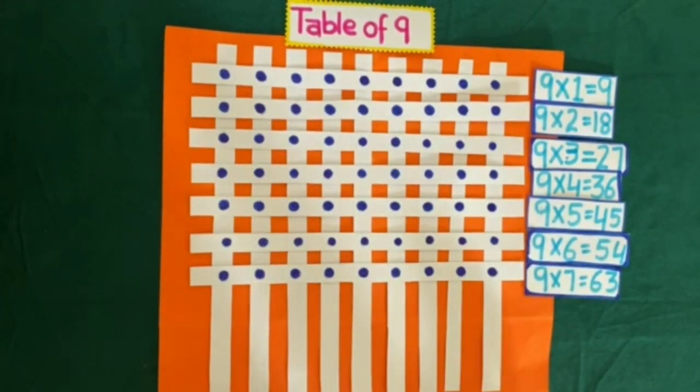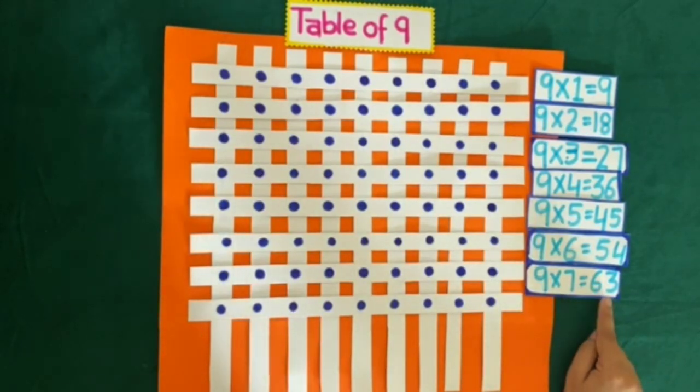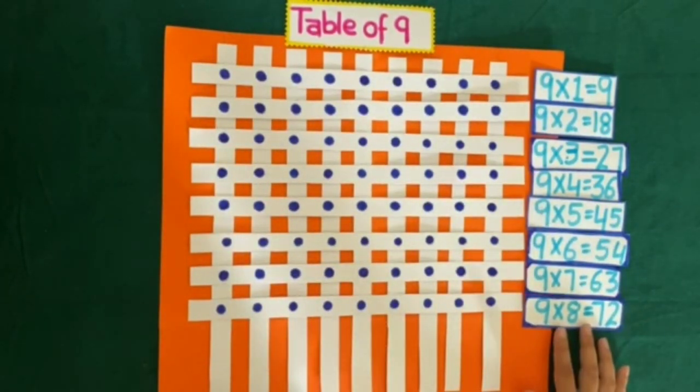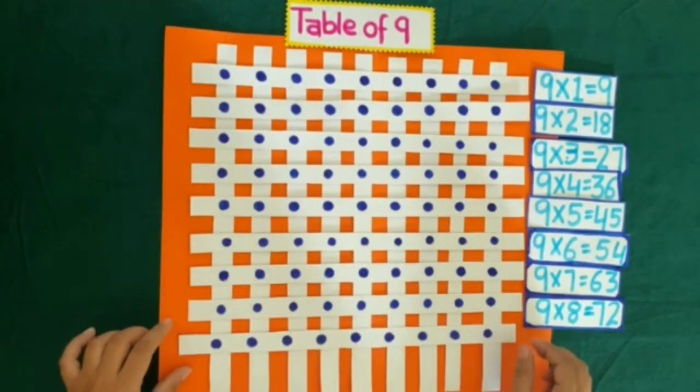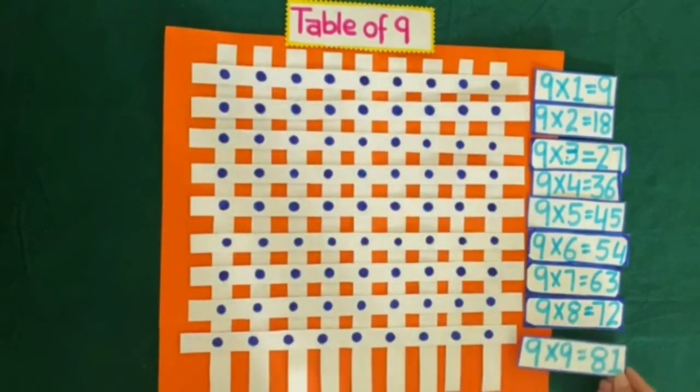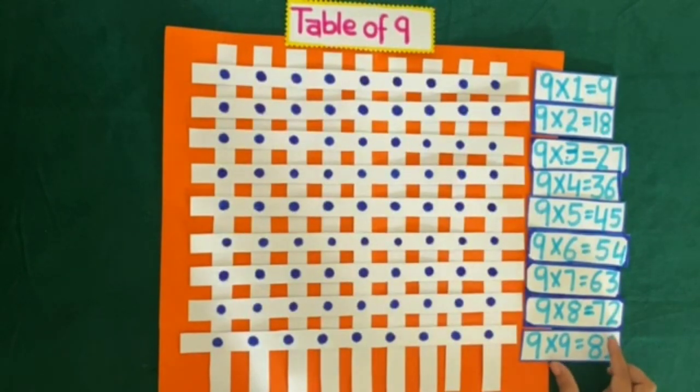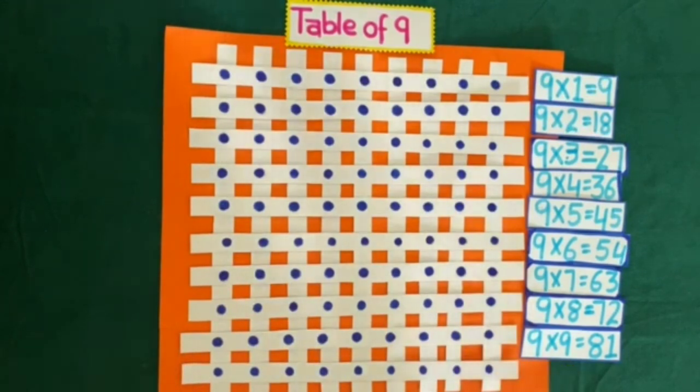Now if we place another horizontal strip, and we add 9 intersection points to 63, we get 72. It means 9 eights are 72. So by placing another horizontal strip, 72 plus 9 is equal to 81, which means 9 nines are 81. Now if I add one more horizontal strip, 9 tens are 90.